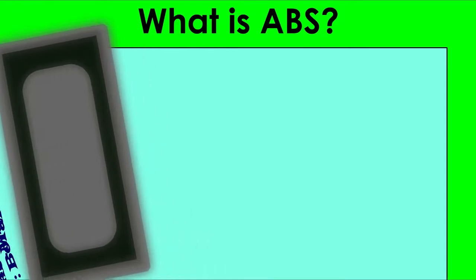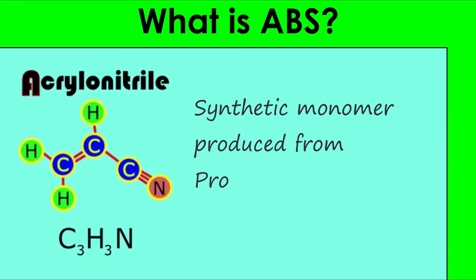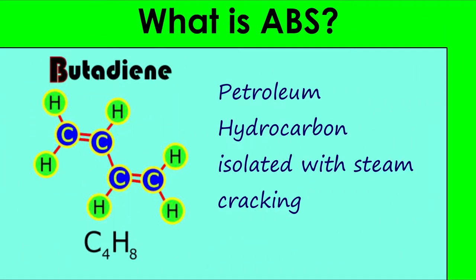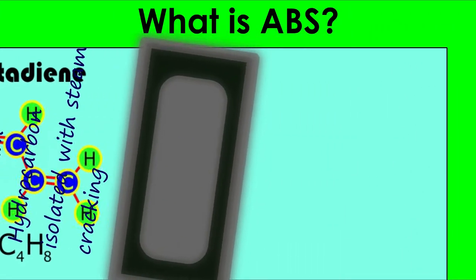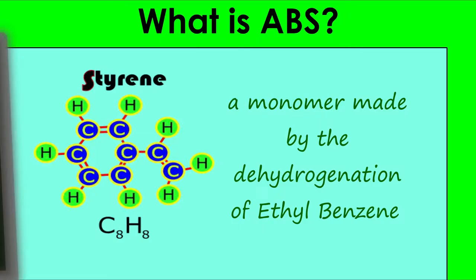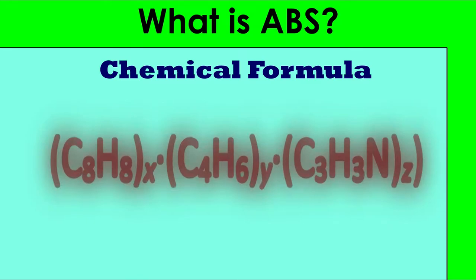ABS is made up of three constituent parts: acrylonitrile, a synthetic monomer produced by propylene and ammonia; butadiene, a petroleum hydrocarbon isolated with steam cracking; and styrene, a monomer made by dehydrogenation of ethylbenzene. The chemical formula for ABS is C8H8, C4H6, C3H3N.